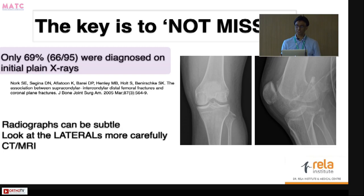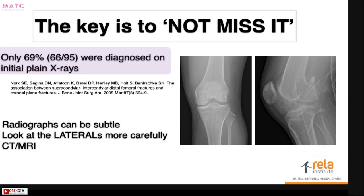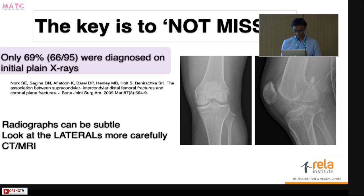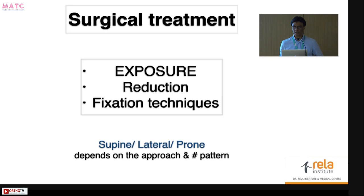One of the most important things when treating these fractures is not to miss them on initial evaluation. A paper from Abavi in 2005 showed that almost 30% were missed on initial plain radiographs and were subsequently diagnosed on CT scans. These fractures can look very subtle on x-rays, and CT scan is the standard of investigation for diagnosis. Sometimes, if there is a dislocation component, MRI can also be used. Make sure you look at your lateral x-rays very carefully.